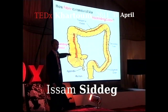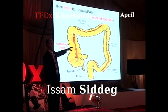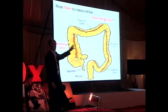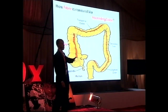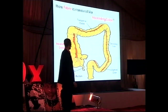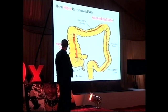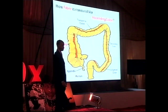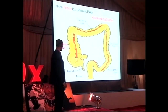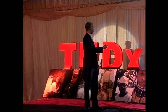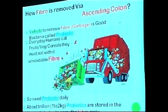This is a human colon where fiber passes through like a pipe. The fiber must travel through and be removed via the ascending colon.